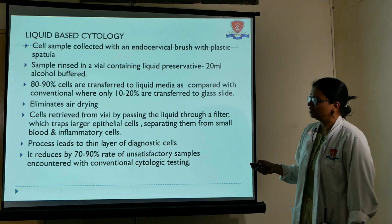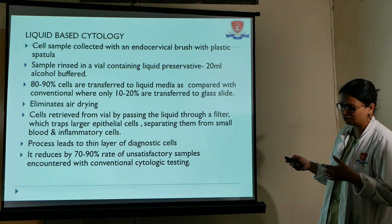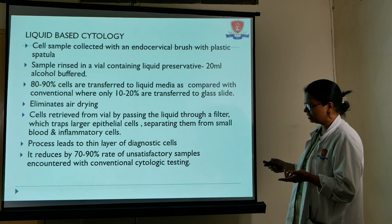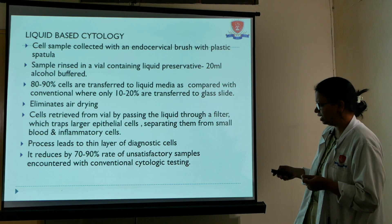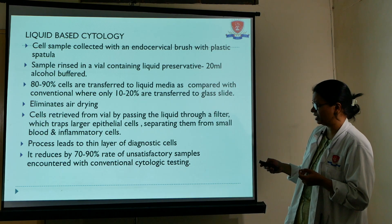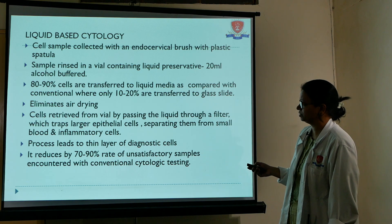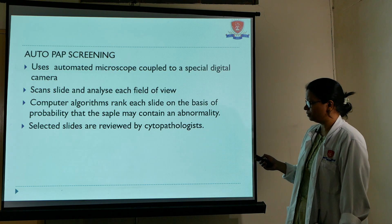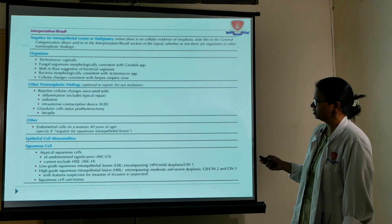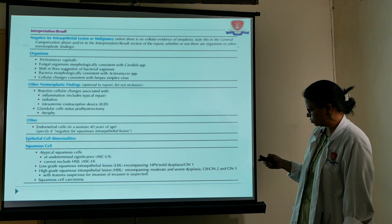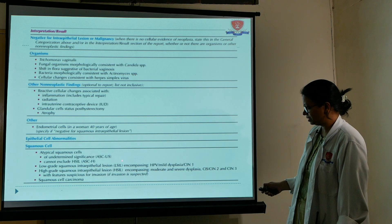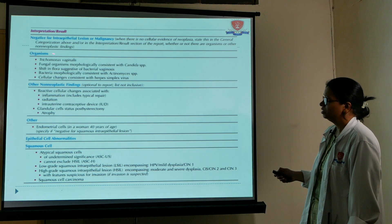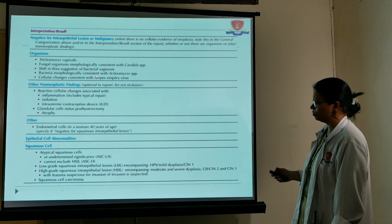Liquid-based cytology collects samples with an endocervical brush but instead of making a slide, all samples are rinsed in a liquid preservative. This leads to fewer unsatisfactory specimens, a uniform thin layer of diagnostic cells, removal of excess blood cells and mucus, and reduced chances of unsatisfactory samples. Auto PAP screening uses automated microscopes to read slides and flag abnormals for manual checking. Organisms identifiable by Pap smear include Trichomonas, fungal organisms, bacterial vaginosis, Actinomyces, and herpes simplex virus.